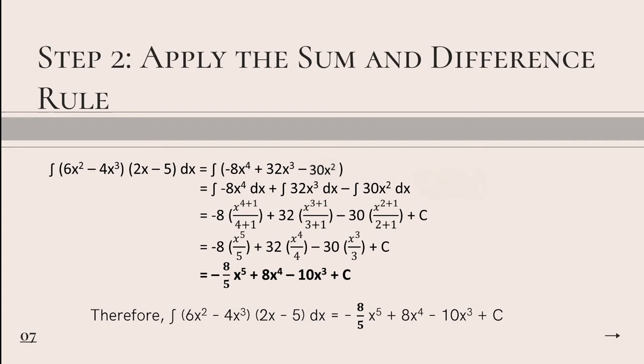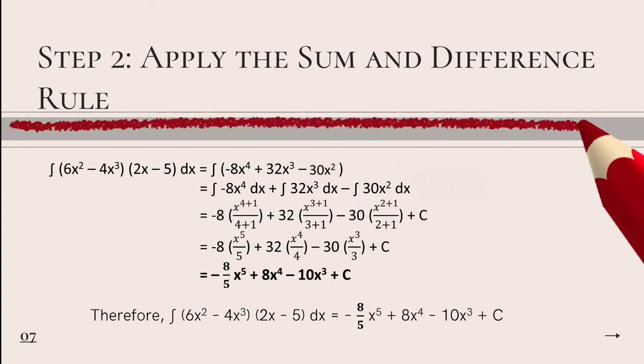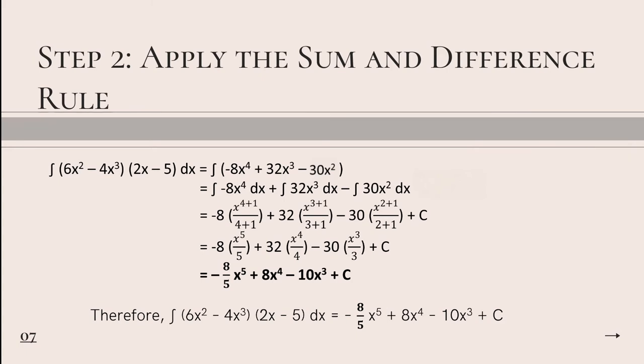This time, we can proceed to step 2, in which we will use the sum and difference rule of the anti-derivatives of a function. The integration of negative 8x raised to the power of 4 dx plus the integration of 32x cubed dx minus the integration of 30x squared dx.